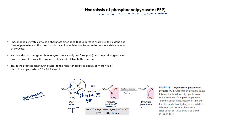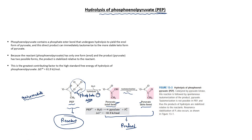In this reaction, the reactant is only one — phosphoenol pyruvate. The product is also one, which is pyruvate, but pyruvate exists in two forms. Because the product exists in two forms, the products are more stable compared to the reactant. That is why the standard free energy of hydrolysis of phosphoenol pyruvate is highly negative.